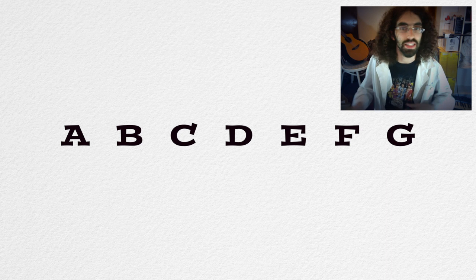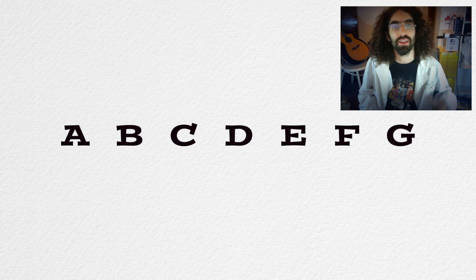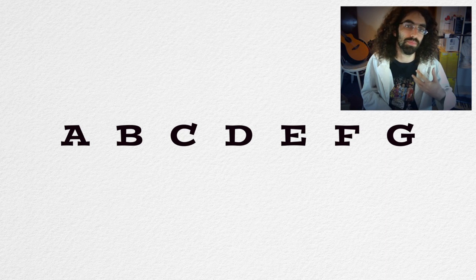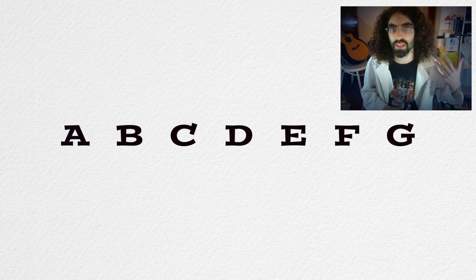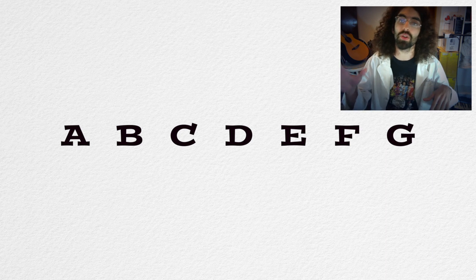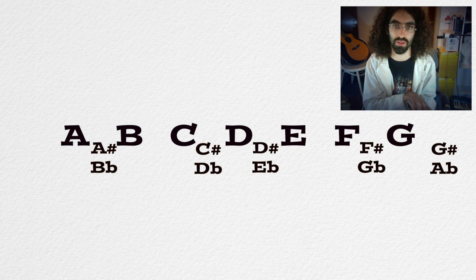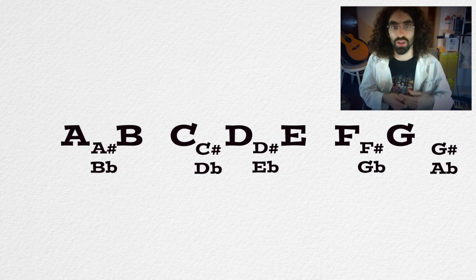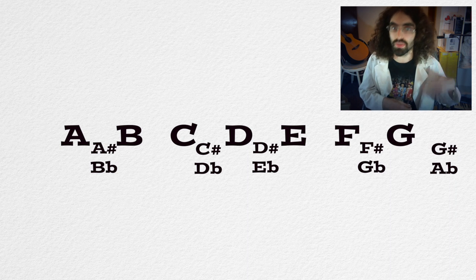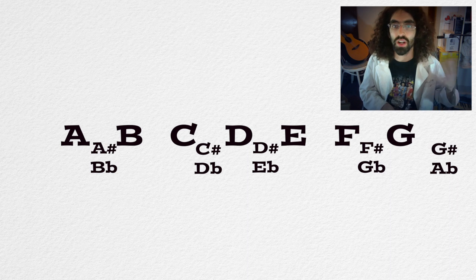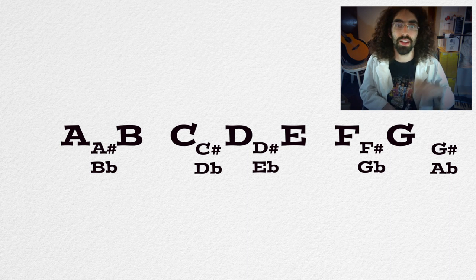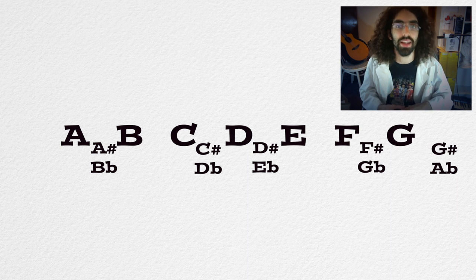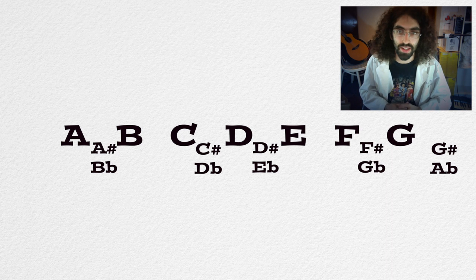It's just A, B, C, D, E, F, and G. In traditional Western music, we have 12 distinct notes. We've got those seven notes A, B, C, D, E, F, and G, and then five more that fall in between those notes: A-sharp (also called B-flat), C-sharp or D-flat, D-sharp or E-flat, F-sharp (also called G-flat), and G-sharp (also called A-flat).